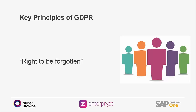Firstly, individuals covered by the legislation have the right to be forgotten. This means they must be able to have their personal data erased on request. For example, say you have an employee who leaves and wants their HR data erasing from SAP. The relevant person with authorised access to the HR data can go to the record in question and where possible blank out any data categorised as sensitive — that might include home address, marital status, passport details — in other words, any data that can identify the individual.